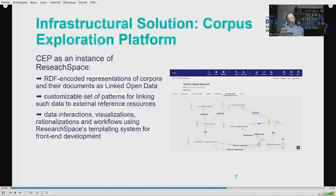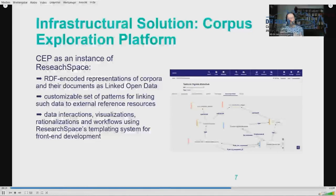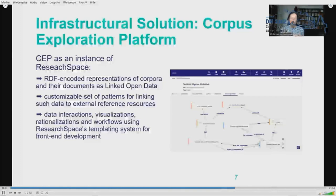The knowledge graph is basically stored in triplets. Moreover, this equips a customizable set of patterns for linking such data to external reference resources. A dynamic knowledge graph can be manifested in various data interactions, visualizations, and workflows using ResearchSpace as a templating system for front-end development.